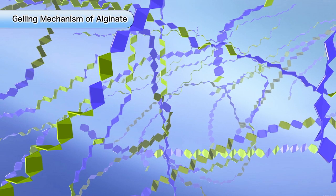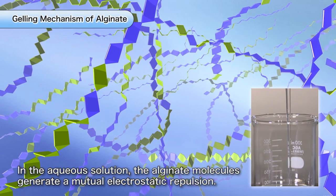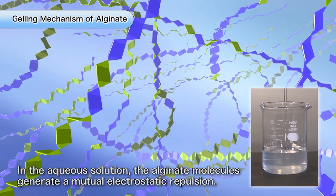The molecules of alginate in this aqueous solution push away from each other by electrostatic repulsion, forming a smooth viscous liquid.